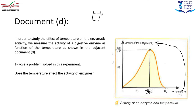For example, if I have a test tube containing salivary amylase as an enzyme, we have to use its specific substrate, which is cooked starch. We need to put a suitable chemical medium which is neutral, so I need to add distilled water.